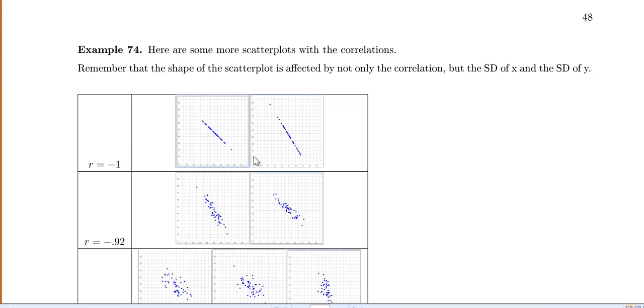So for r equals negative 1, here's two different data sets that both have a correlation of negative 1. Notice that they do look slightly different. Or here's two different correlations that both have a correlation of negative 0.92. And they look different.